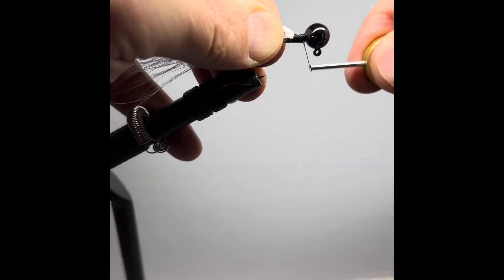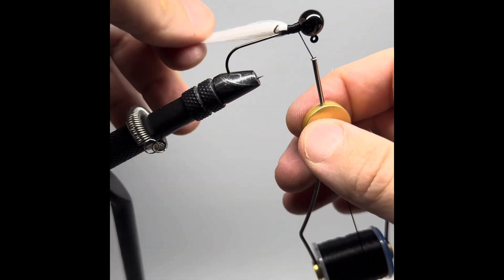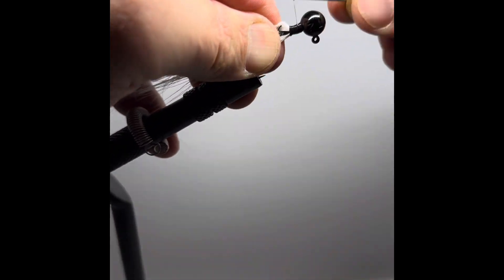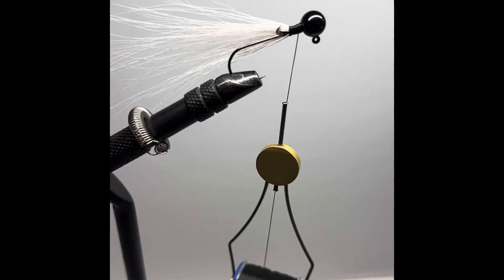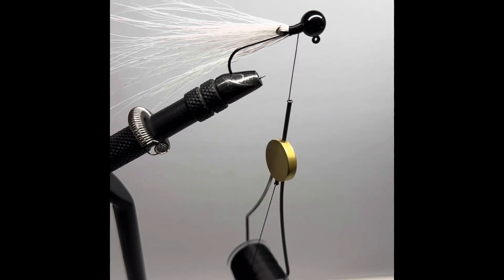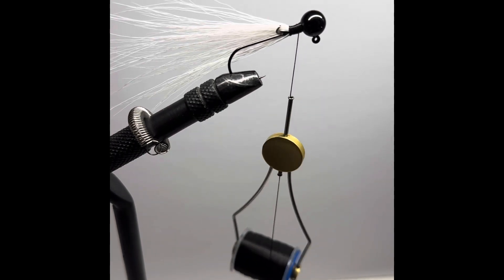We're going to start off with white on the top and the sides, pinching it just to move it where we want it. And we're going to repeat this process a couple of times until we get that hook shank covered up.